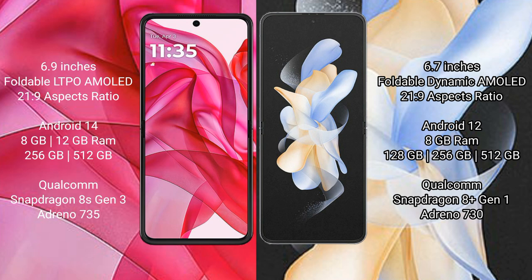Motorola Razr 50 Ultra comes with 8GB or 12GB RAM and 256GB or 512GB internal storage, powered by a Qualcomm Snapdragon 8 Gen 3 processor with an Adreno 735 GPU. Samsung Galaxy Z Flip 4 comes with 8GB RAM and 128GB, 256GB, or 512GB internal storage, with a Qualcomm Snapdragon 8 Gen 1 processor and Adreno 730 GPU.